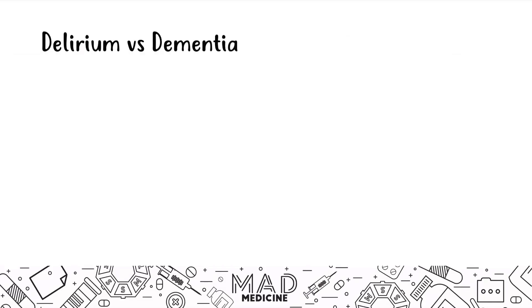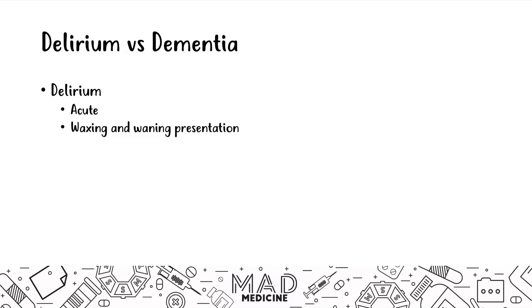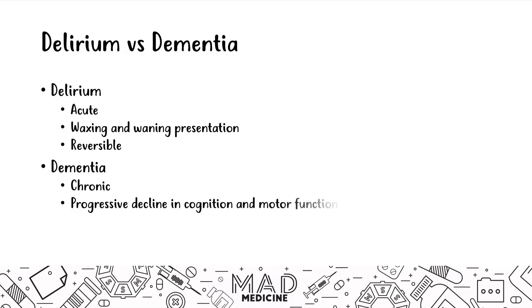Let's compare delirium and dementia. Delirium is acute — it occurs rapidly, with a waxing and waning presentation. Patients might seem normal one moment and then agitated or hallucinating a few minutes later, then return to normal. It is reversible — treat the underlying condition and it resolves. Dementia, on the other hand, is a chronic condition that develops over a long period of time, with a progressive and irreversible decline in cognitive and motor function.